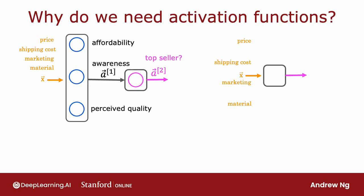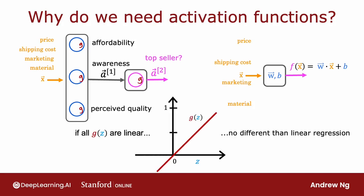Recall this demand prediction example. What would happen if we were to use a linear activation function for all of the nodes in this neural network? It turns out that this big neural network will become no different than just linear regression. This would defeat the entire purpose of using a neural network because it would not be able to fit anything more complex than the linear regression model that we learned about in the first course.